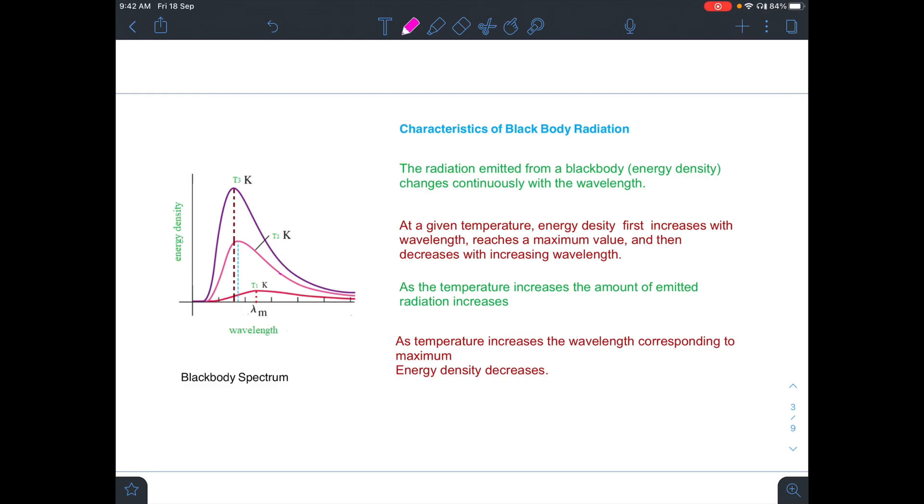Let us now discuss the characteristics of black body radiation. As shown in the figure, the energy density of a black body continuously changes with wavelength. At a given temperature, say at temperature T1, the energy density first increases,